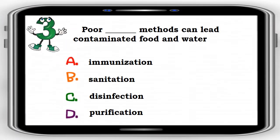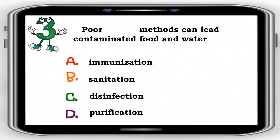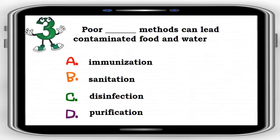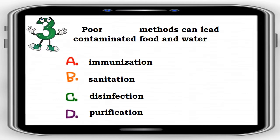Number 3. Poor blank methods can lead to contaminated food and water. A. Immunization, B. Sanitation, C. Disinfection, D. Purification. The correct answer is letter B. Sanitation.